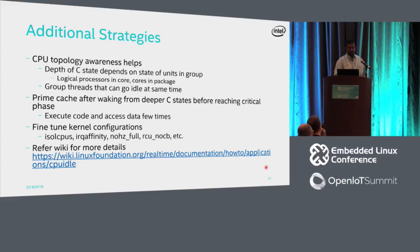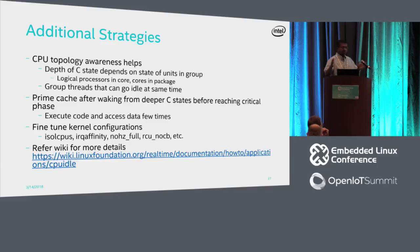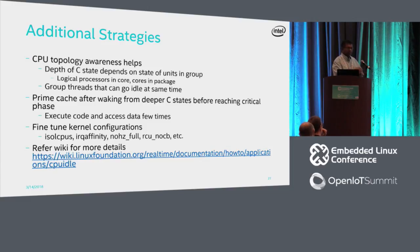There are some additional strategies for general CPU idle use. Entering C-states depends on topology — CPUs are organized in cores, and a core will enter a particular C-state only when all logical CPUs in that core enter that state. So grouping tasks that have opportunities to idle together gives a better chance of achieving more power savings. Another important strategy is priming the cache before reaching the deadline — this is standard real-time application development practice to ensure consistency.